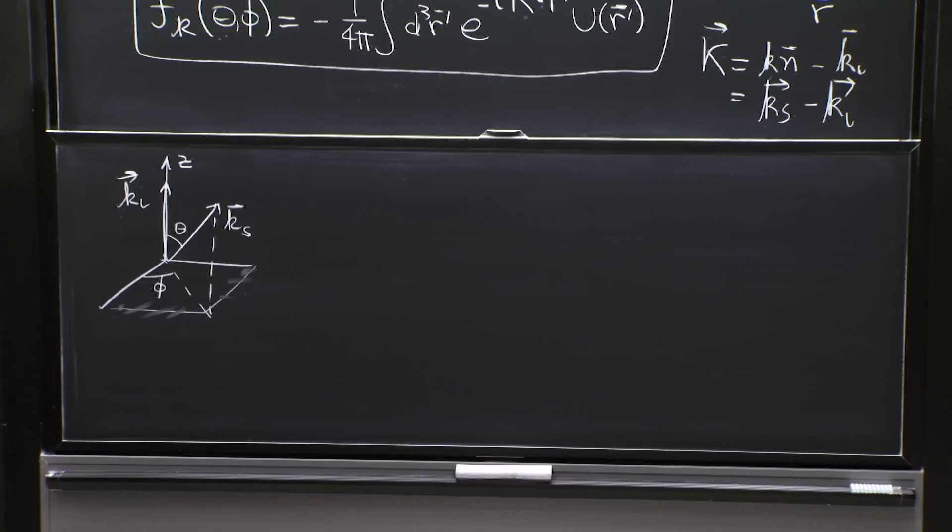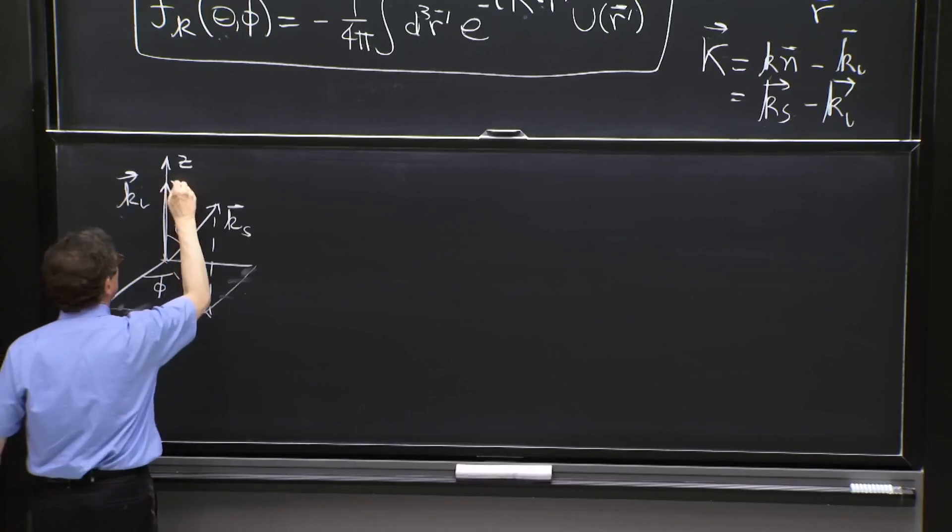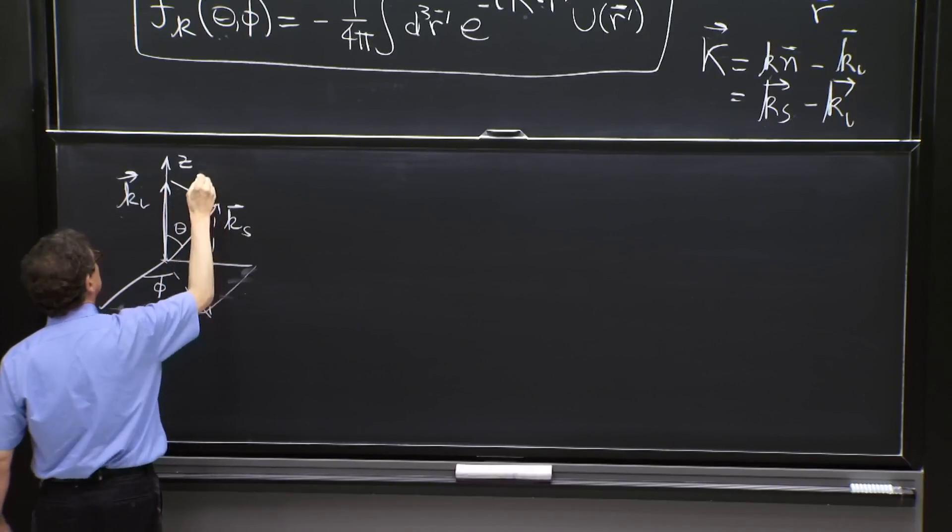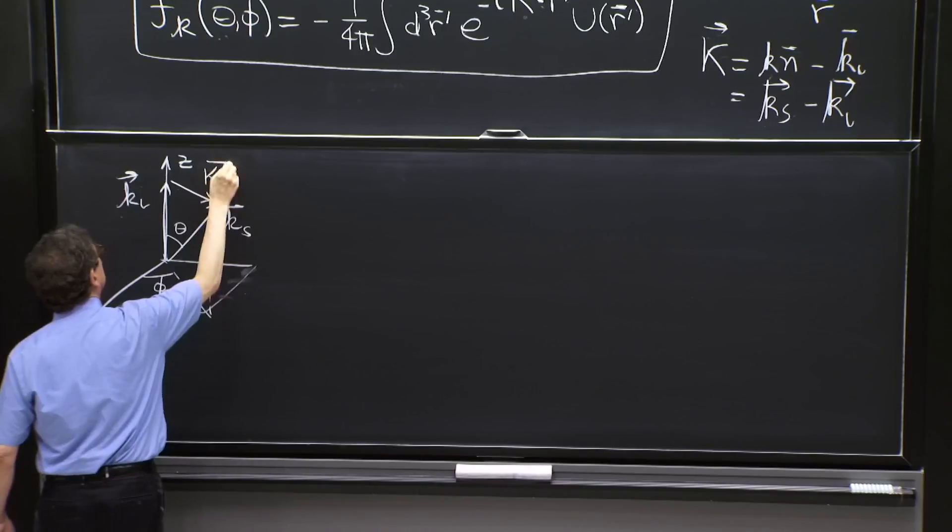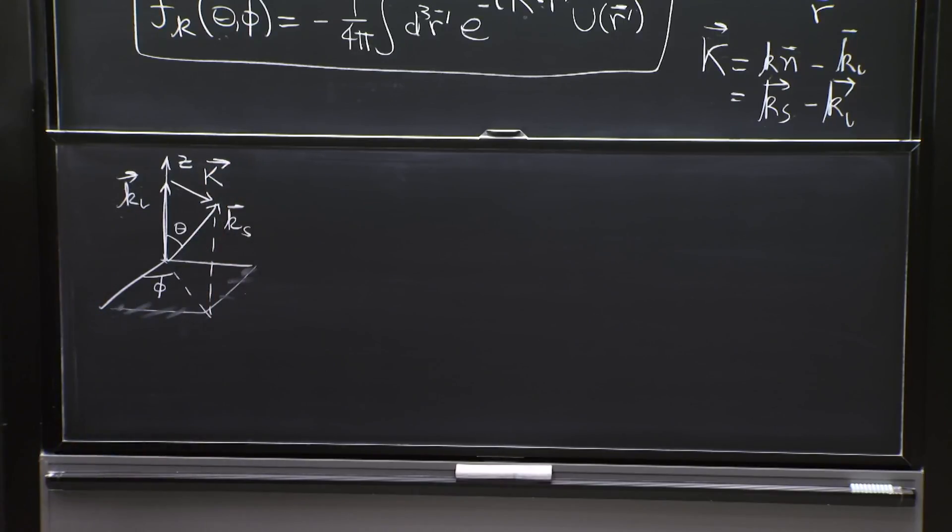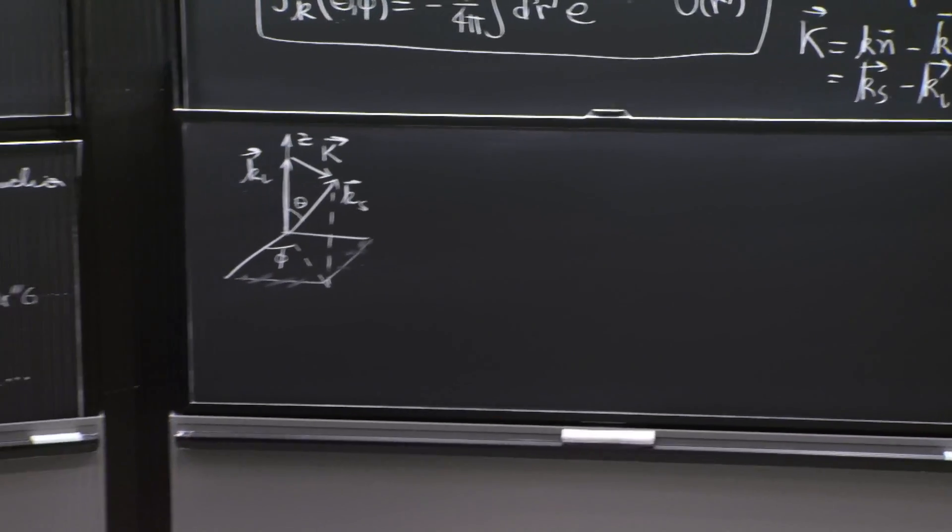And the vector k is k scattered minus k initial. So the vector k is the transfer vector, is the vector that takes you from k initial to ks, is the vector that must be added to k initial to give you the scattered vector.